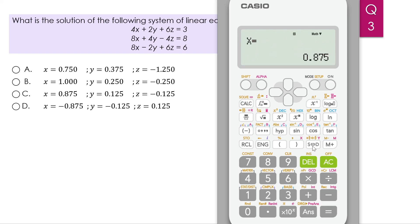The x value is 0.875, which matches C. Another equal, y is 0.125, and z is negative 1.25, and this is C.